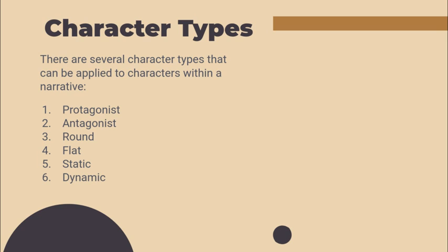There are several different character types that can be applied to characters within a story. We have the protagonist, antagonist, round, flat, static, and dynamic character types. Today we're going to review all six of these and apply them to the Harry Potter series.